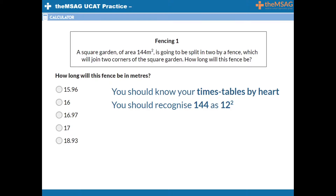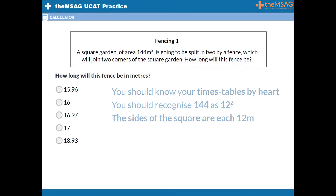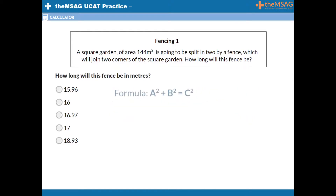You should also know that the area of the square is the length of one of its sides squared. Therefore, the sides of the square garden are each 12 metres. Using Pythagoras, we can now calculate the length of the diagonal fence. Use our formula of a squared plus b squared equals c squared, so 12 squared plus 12 squared equals the length of the new fence squared.